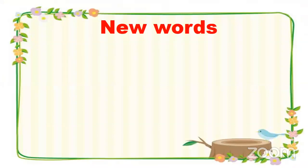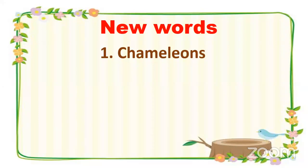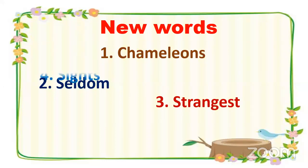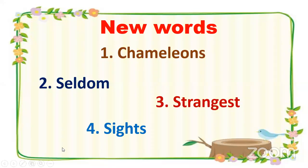Now I will introduce you to some new words. The first is chameleons — C-H-A-M-E-L-E-O-N-S. The next word is seldom — S-E-L-D-O-M. The third word is strangest — S-T-R-A-N-G-E-S-T. The fourth one is sights — S-I-G-H-T-S. These are the four new words. You have to write them in your notebook and practice by learning the spellings. I have told you the meaning of all these words during the explanation.